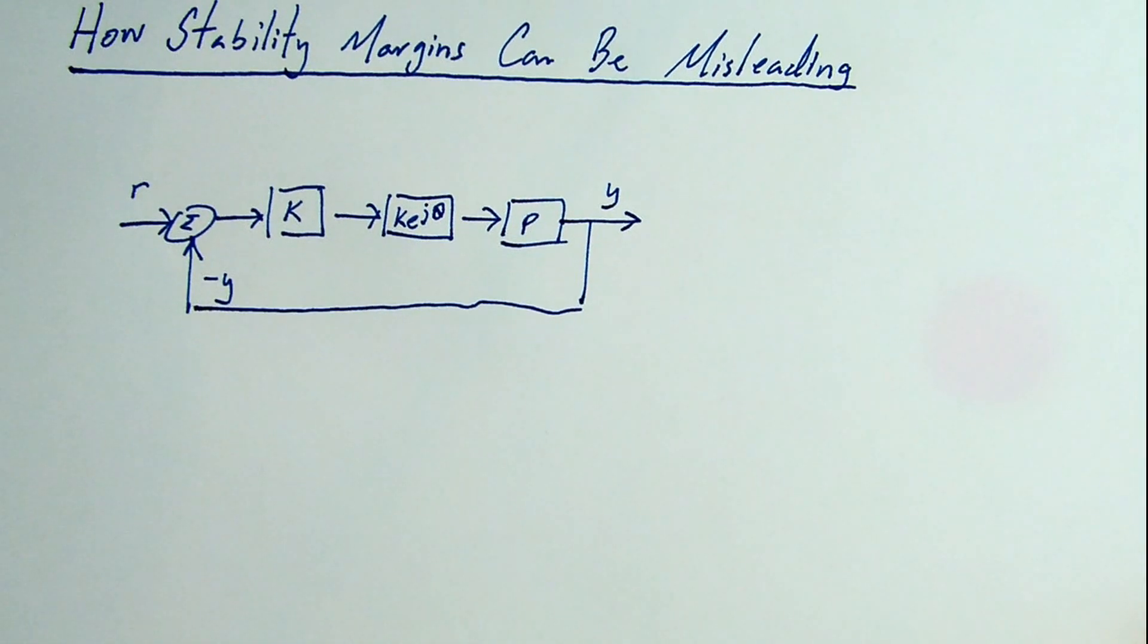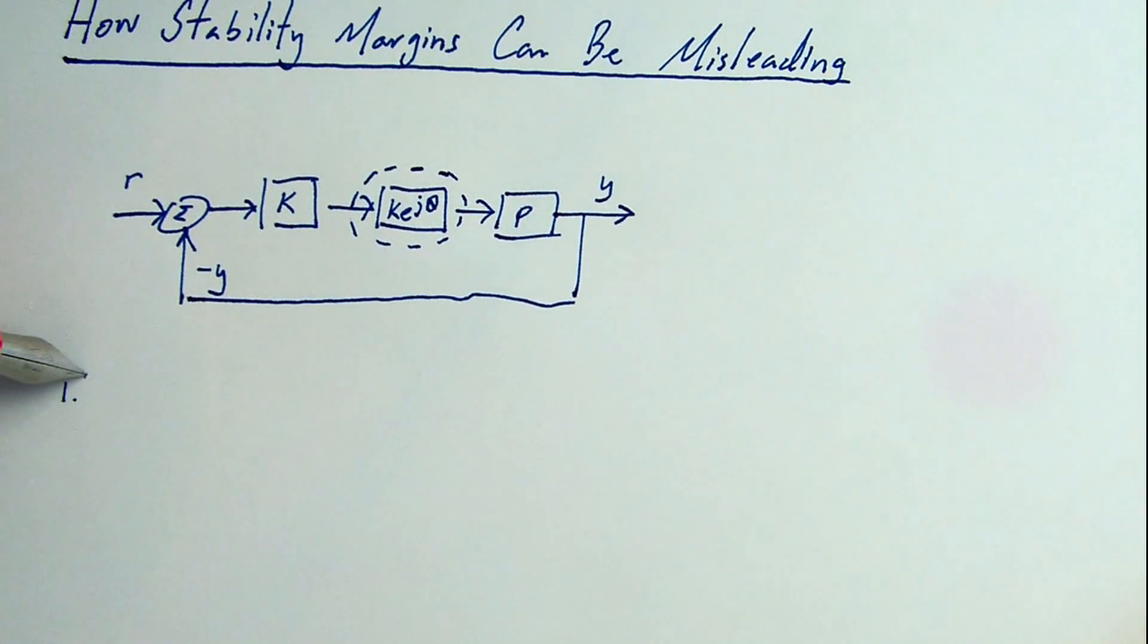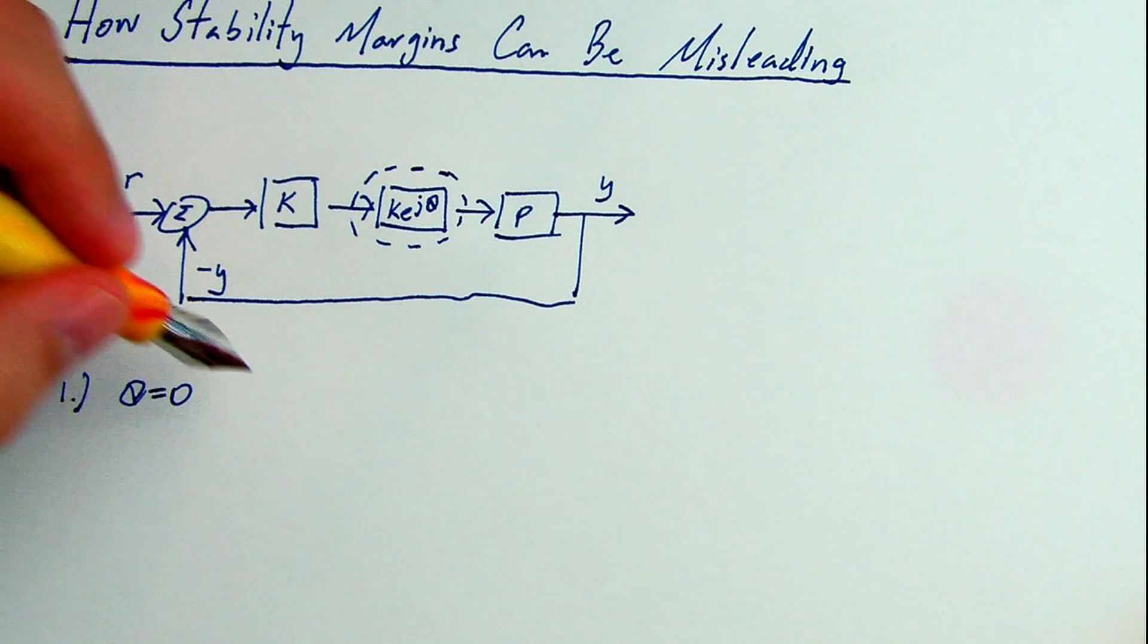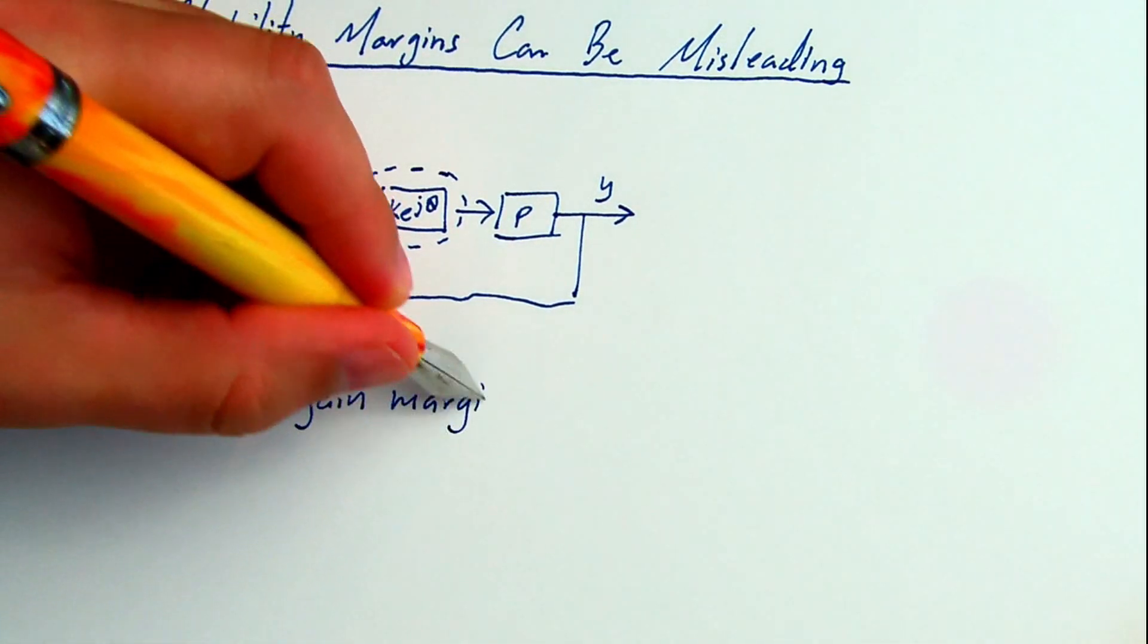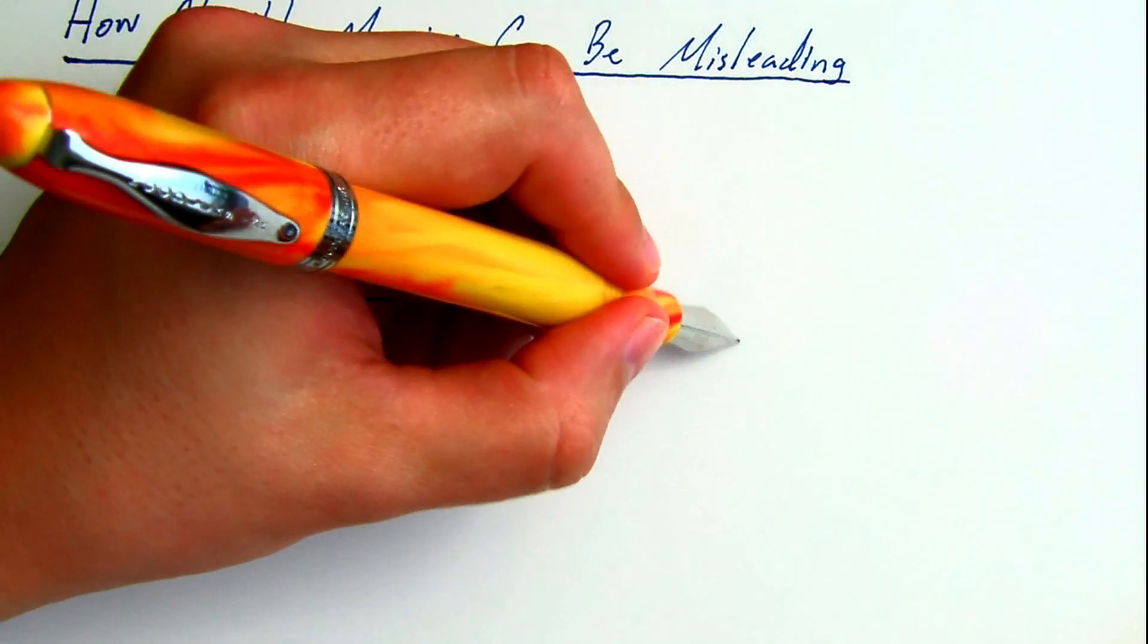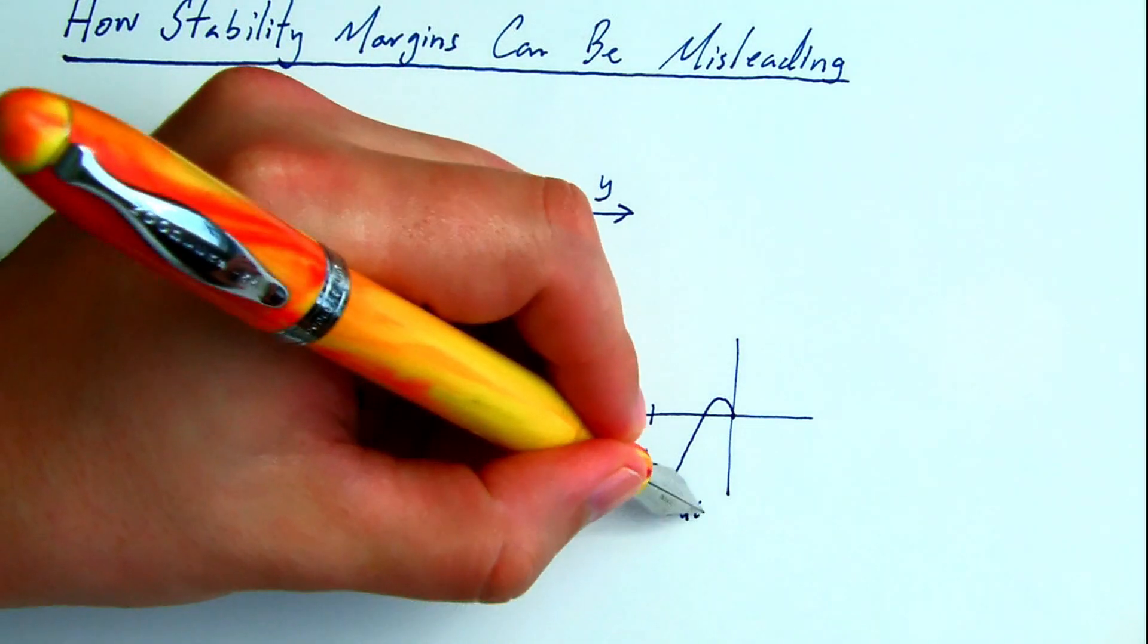In the previous videos, we looked at the gain margin and the phase margin. In the previous video in particular, we derived gain margin by setting theta equal to zero and determining the value of k, such that the phasor at minus 180 degrees touched the critical point.